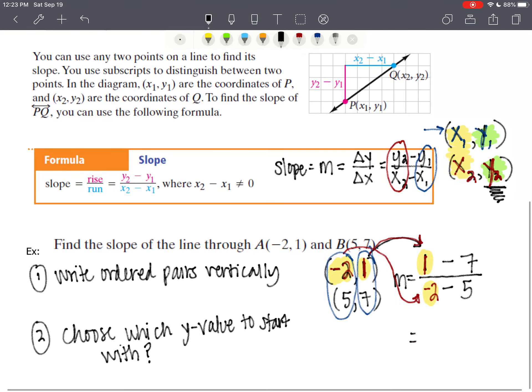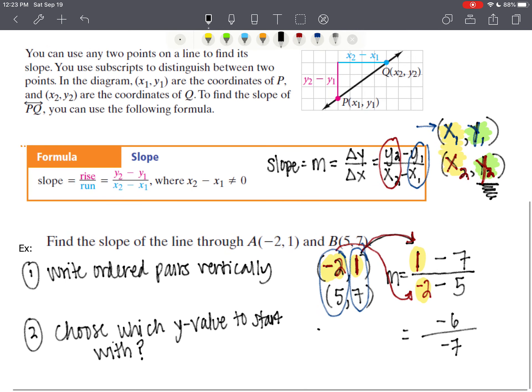So we're starting with this 1 in the numerator. That means we need to start with negative 2 in the denominator. And then we're going to take 1 minus 7 over negative 2 minus 5. And what did we end up with? Negative 6 over negative 7. And a negative over a negative is a positive.